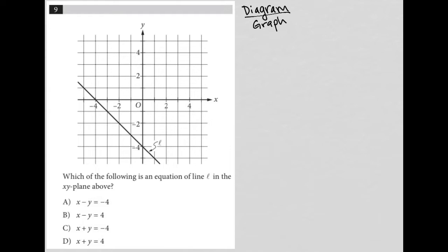So let's see, what do we know about this graph just by looking at it? Well, we can see that it has a y-intercept there at negative 4 on the y-axis. It also has an x-intercept here at negative 4 on the x-axis.